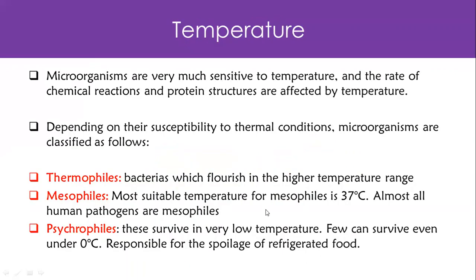Temperature is another very important element. High temperatures denature many things, including microorganisms. Most microorganisms do well under optimal or normal temperature — around normal body temperature, 37°C. These are called mesophiles, and most human pathogenic microorganisms are mesophiles because our body temperature falls in this range. Bacteria found thriving at very high temperatures, like in hot springs or volcanoes, are called thermophiles. Those found in low temperature environments, like refrigerators, are called psychrophiles.